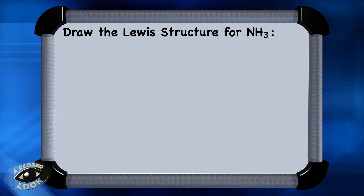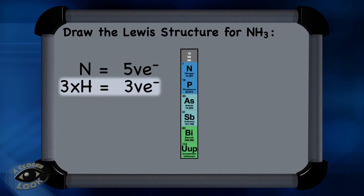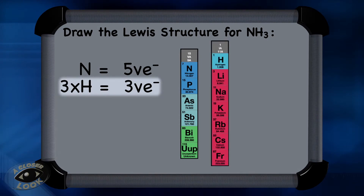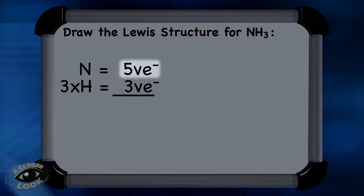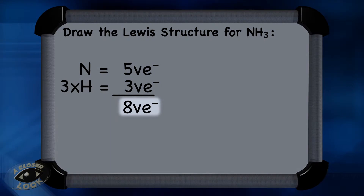Now let's try NH3, which is ammonia. First, tally the electrons. Nitrogen is in group 5, so it has 5 valence electrons. There are 3 hydrogen atoms, which are in group 1, and each hydrogen brings 1 valence electron with it. The total is 5 valence electrons from nitrogen plus 3 from the hydrogens, so there are 8 valence electrons to place in the Lewis structure.